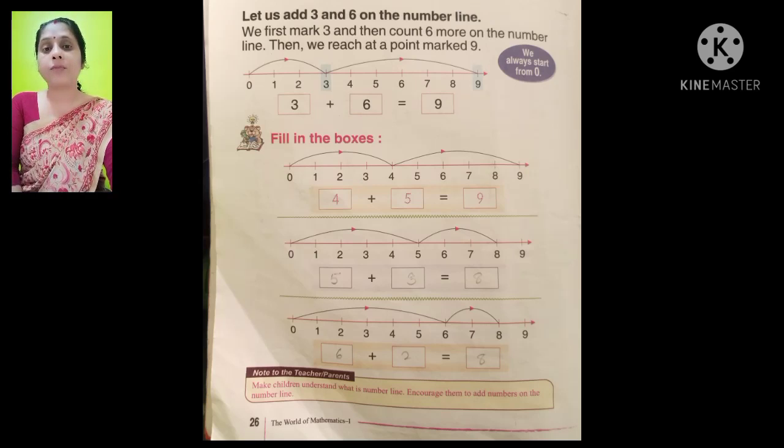Next is 5 plus 3. We will find out where is 5. Counting from 0, we will go 5 numbers forward. We have 5. After that, because you have to add 3 to 5, we will go 3 times forward. 5 plus 3 is equal to 8.